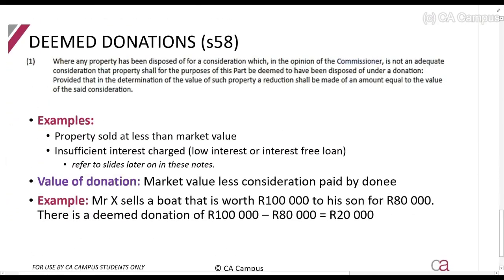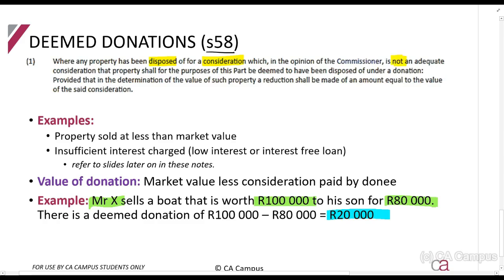Then Section 58 — this is an important one that pops up every now and then. If you sell something at less than its market value, the difference between what you sold it for and the market value is treated as a donation. So Mr. X sells a boat worth R100,000 to his son for R80,000 — that R20,000 difference is treated as if he made a donation to his son of that amount.